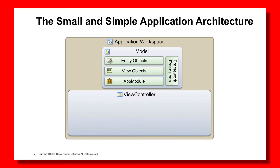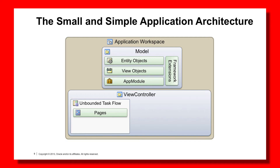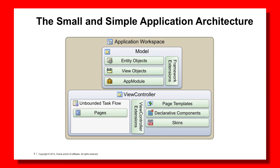Beyond the Model project, we have a View Controller project. The unbounded task flow is made up of a number of pages, again dictated by your requirements. The View Controller project will also contain one or more page templates, decorative components, skins — basically all reusable artifacts — and maybe some View Controller extension classes such as ADF utils, JSF utils, or other shared code. The final part of this pattern is that it generates one EAR file as the single deployment artifact.